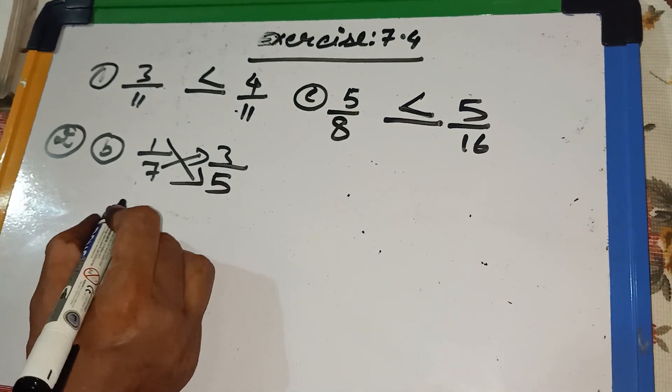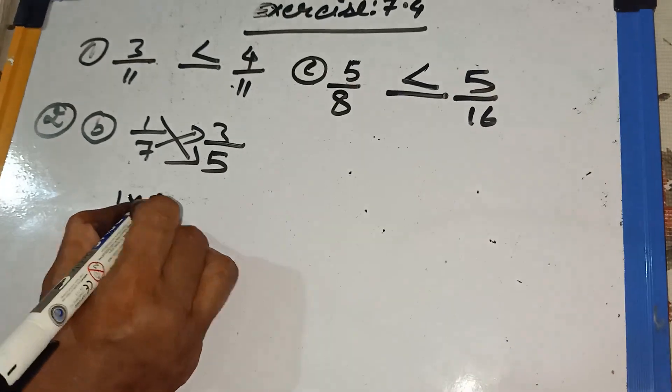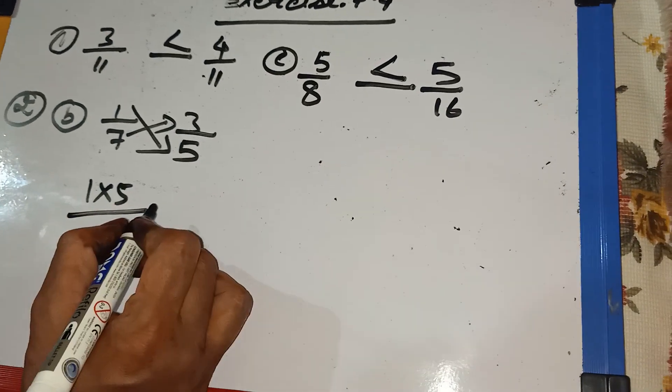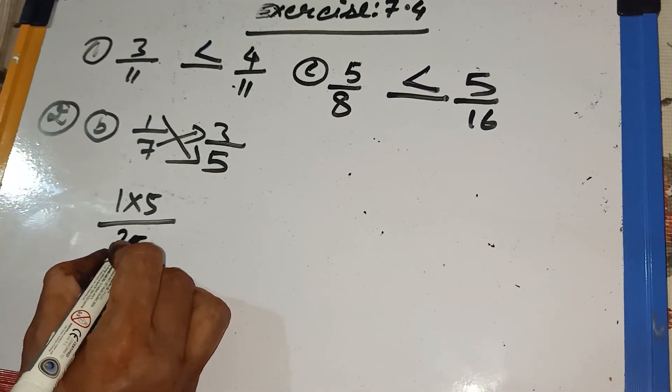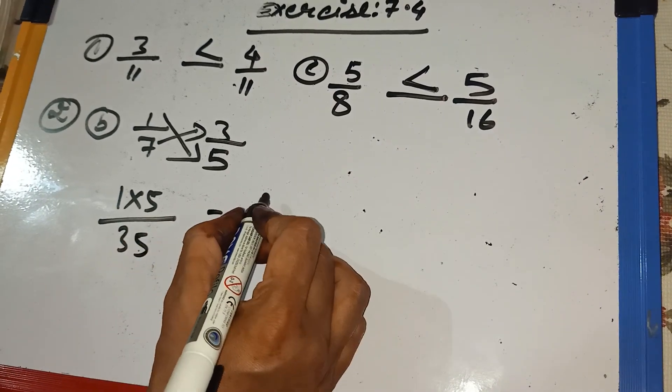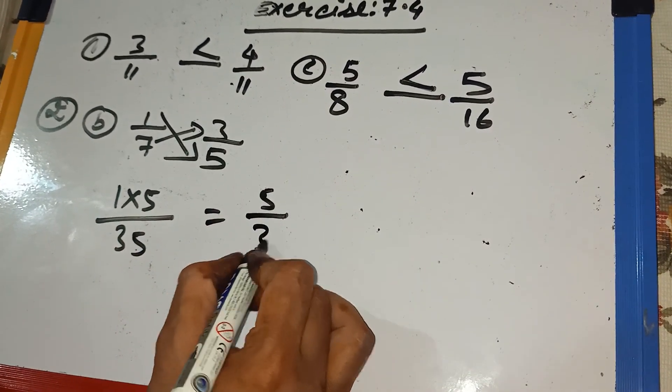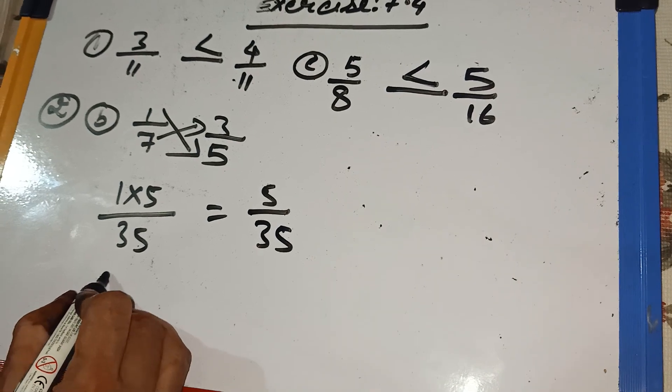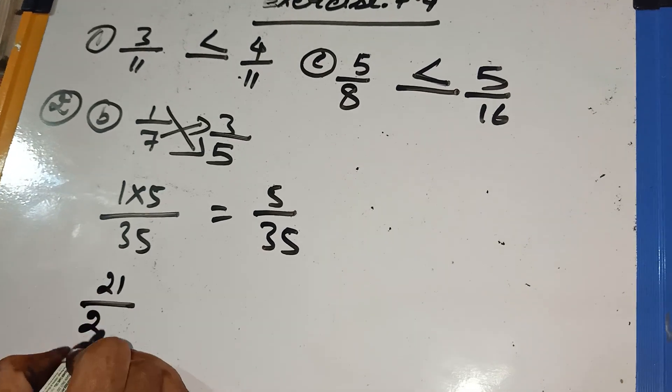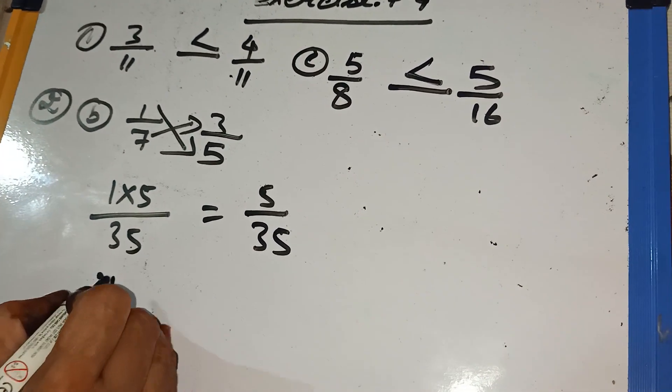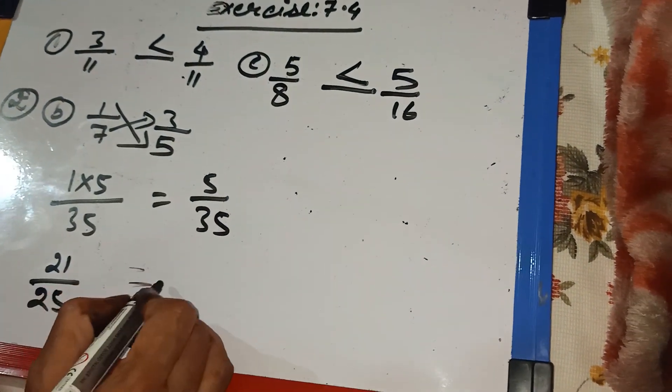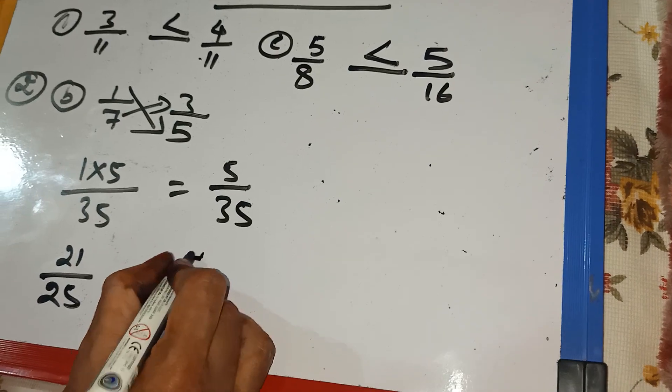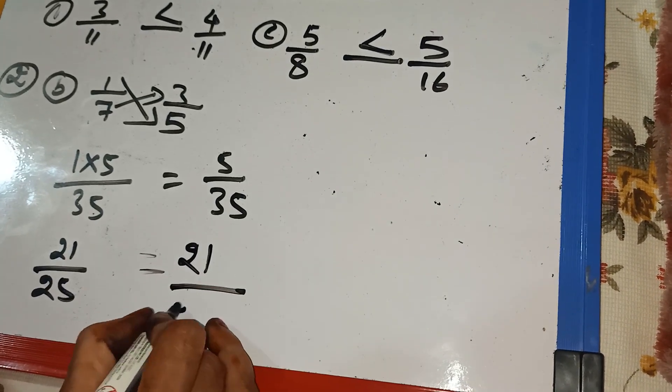First, we do cross multiplication. 1 multiplied by 5, 7 fives are 35. So, it is 5 by 35 and 21 by 35. How can we get 21? 3 sevens are 21.